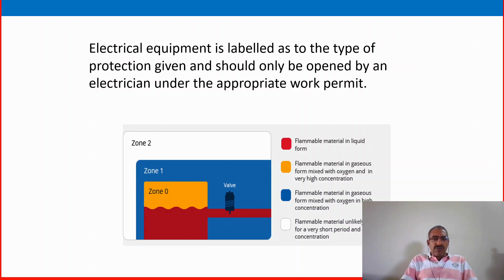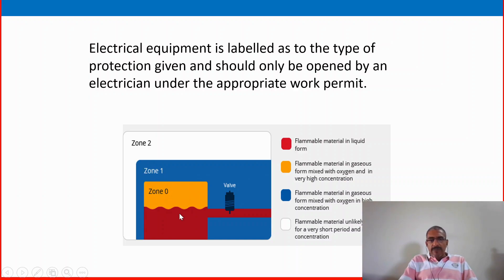In Zone 0, the red color represents the flammable area — flammable material in liquid form and flammable material in gaseous form, mixed with oxygen at very high concentration. Zone 1 is just near the equipment, with a standard practice radius of approximately 1.5 meters for flammable material. Zone 2 is where almost no flammable material is present. We will discuss these zones in detail.